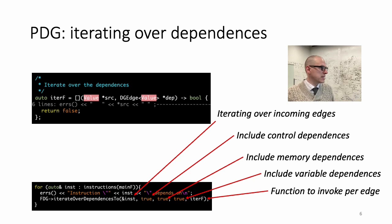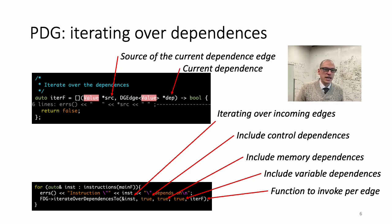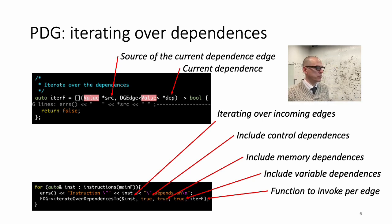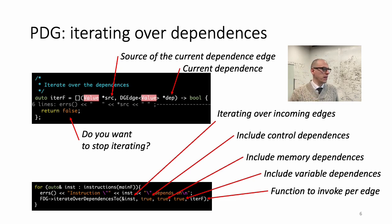Here is an example of a lambda function you can write in C++. The signature's first parameter is the source of the dependence in the current iteration. The second parameter is the dependence itself, which is an instance of the class DGEdge, because the concept of dependence in Noelle is a rich abstraction with a lot of properties and APIs that give you knowledge and semantics about that dependence. These lambda functions have to return a boolean answering the question: do you want to stop iterating or keep iterating over the remaining dependencies?